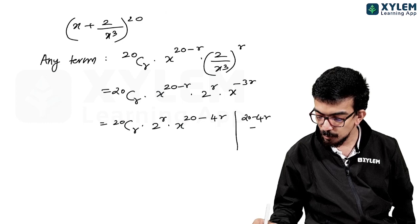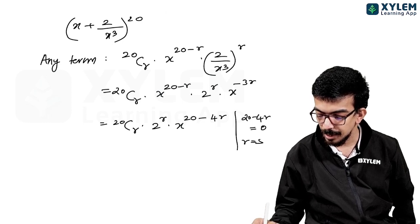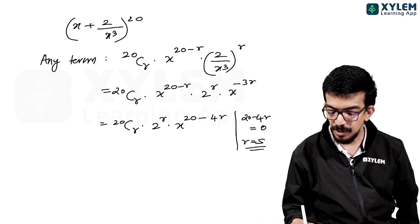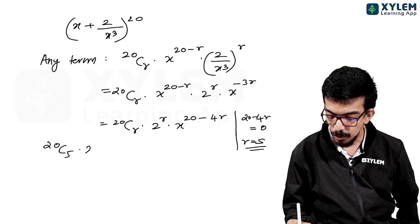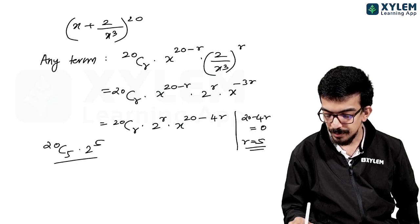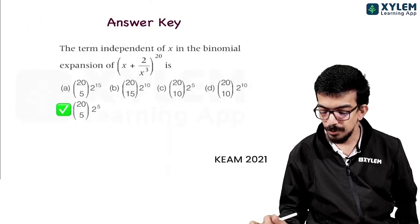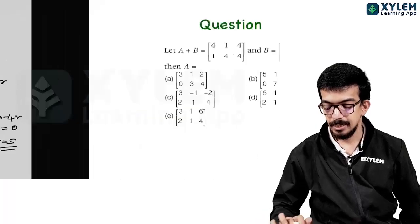For the term independent of x, set 20 - 4r equal to 0, giving r equal to 5. Therefore the answer is 20C5 into 2^5, which is the correct answer.